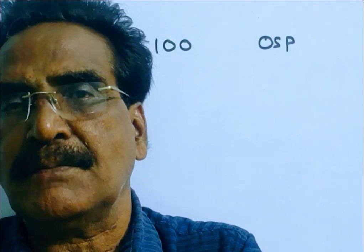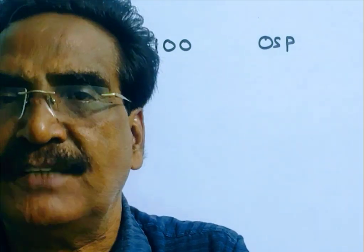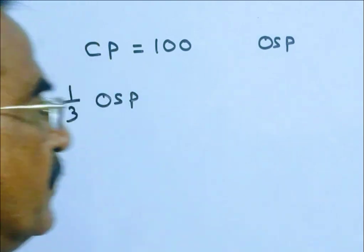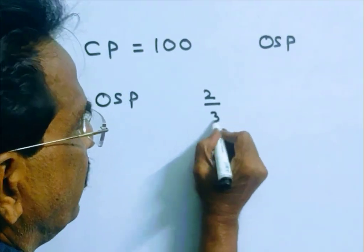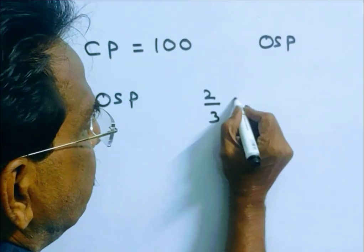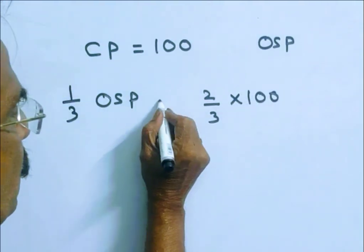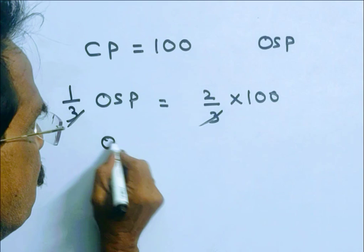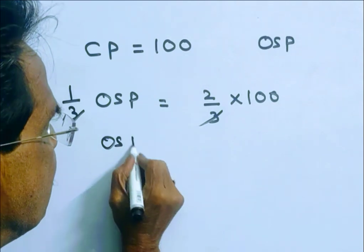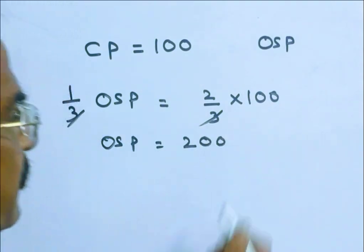A 1/3 loss means the selling price must be 2/3 of the cost price. Say cost price is 100, so 33 gets cancelled and the original selling price is 200.